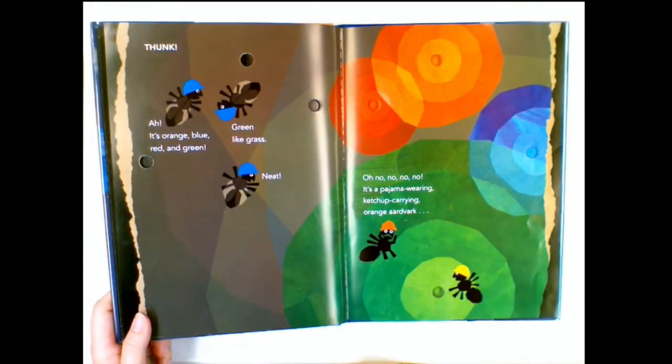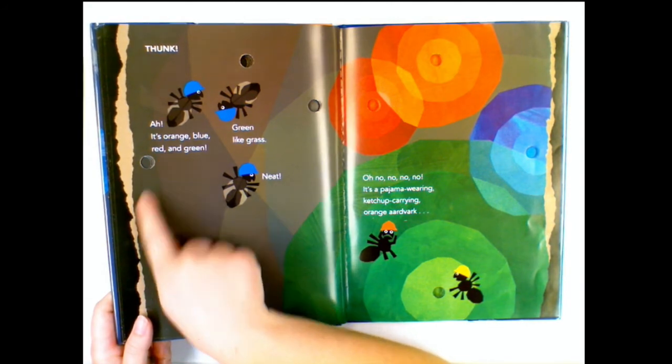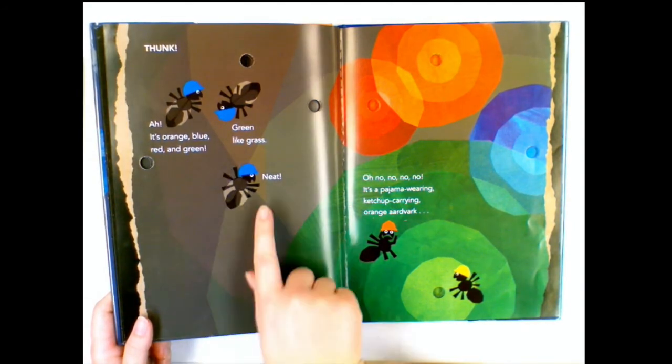Bunk! Oh! It's orange, blue, red, and green. Green like grass. Neat!